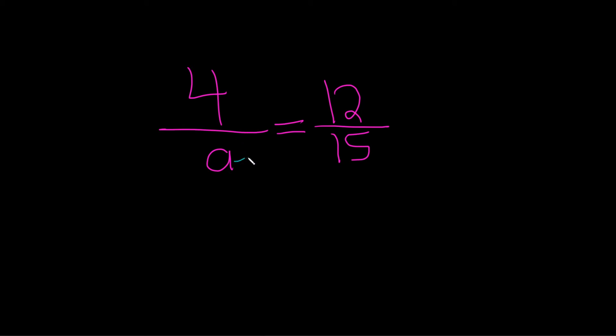So we just take the A and multiply it by the 12, like this. That'll give us 12A. And then you take the 15 and multiply it by the 4, like this. So 4 times 15 is 60.